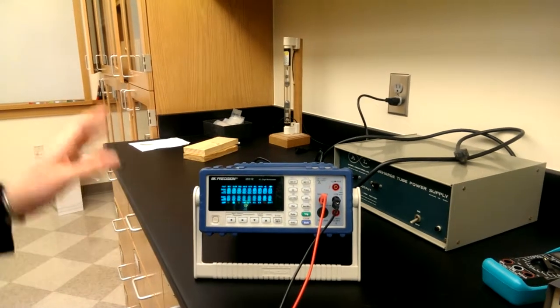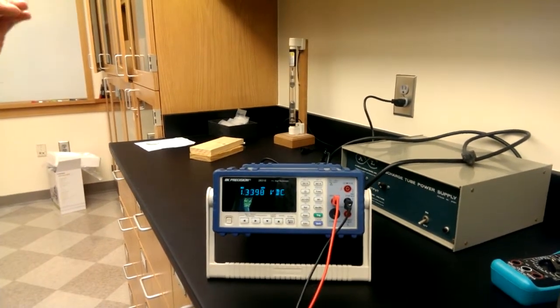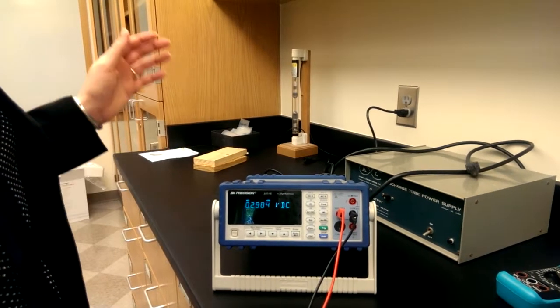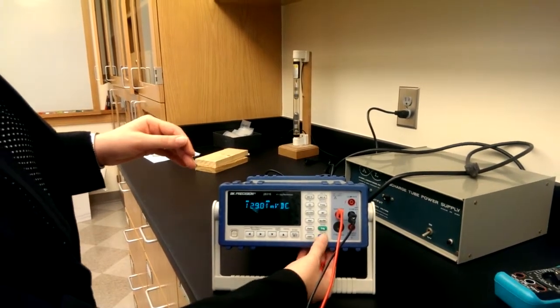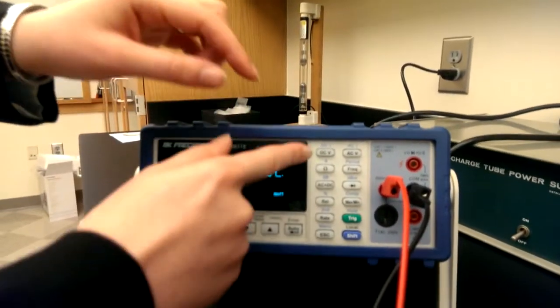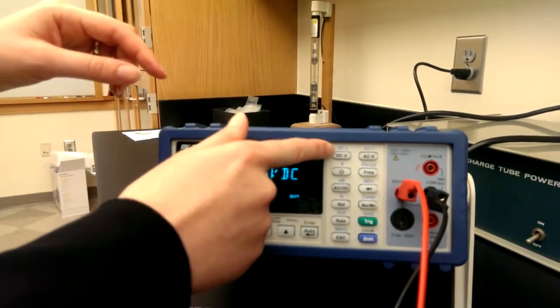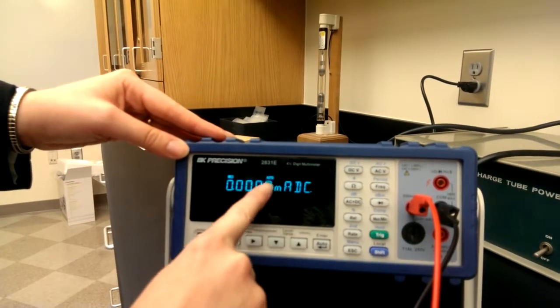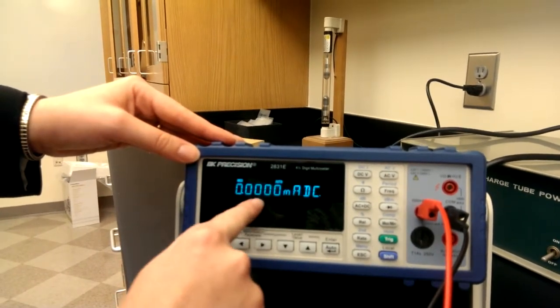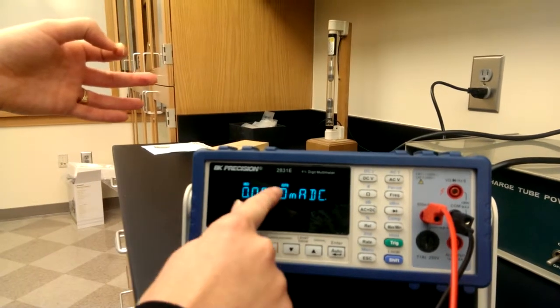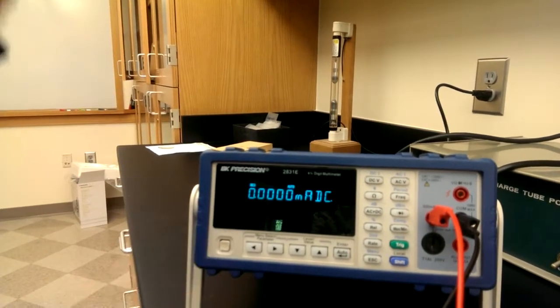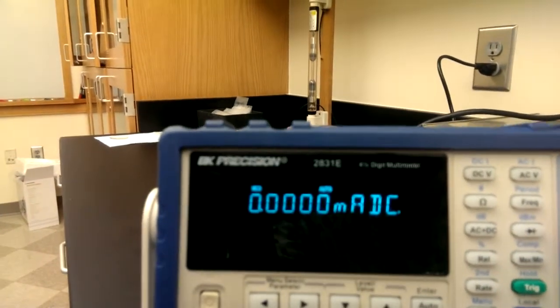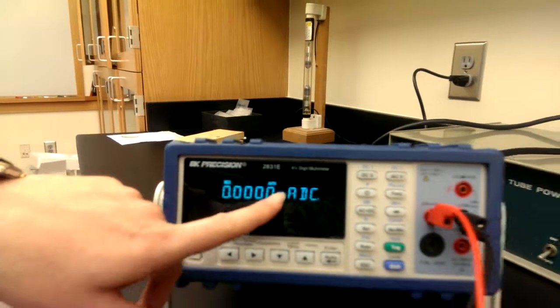And you turn it on. Now initially it takes a second for it to adjust, and it defaults to reading voltage. So to make it read current, you need to hit shift, this blue button, and then you go up to where it says DCV. If you look above it in blue, it says DCI—that's DC current. You hit that button, and now it's reading milliamps DC. Note that this is four digits after the decimal place, so this can give you a smaller reading than the turquoise multimeters do.